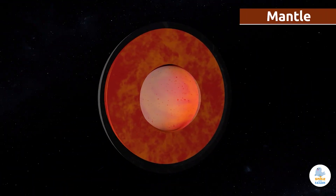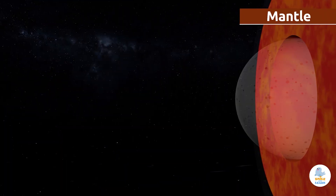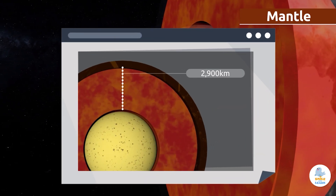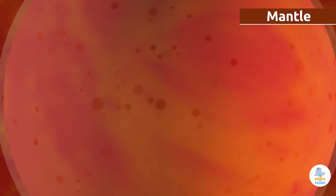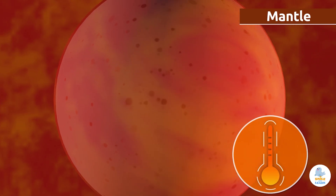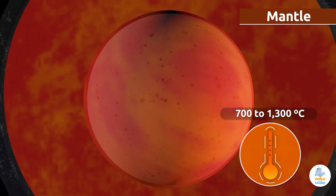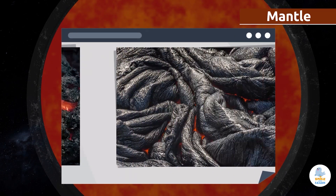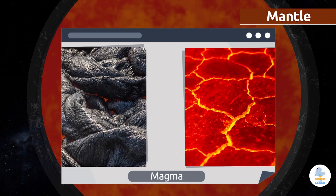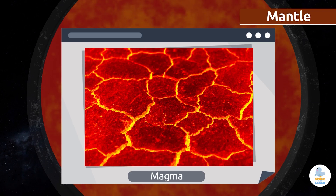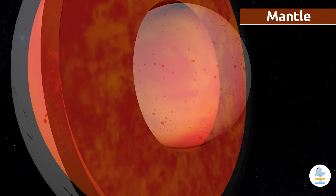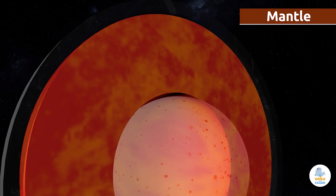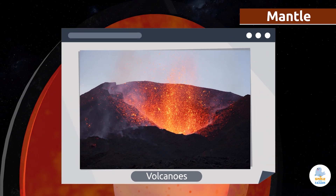The second layer of the Geosphere is called the mantle. It is 82% of the Earth's volume, being 2,900 kilometers thick. The temperature of the mantle is really high, ranging from 700 to 1,300 degrees Celsius. That's why it's made up of molten rock called magma. Sometimes, magma finds its way up to the surface and flows through the void between the tectonic plates — this is when volcanoes erupt.